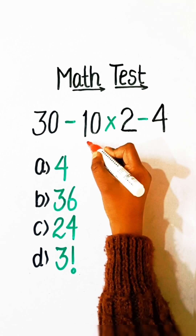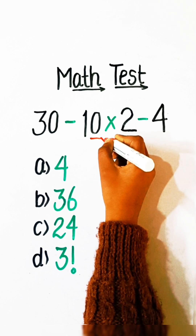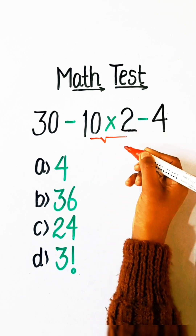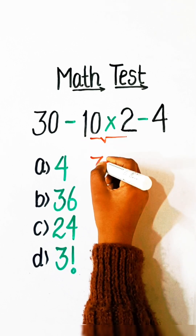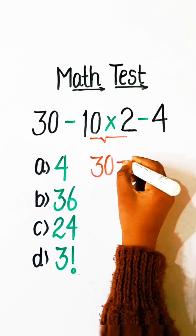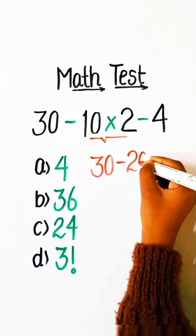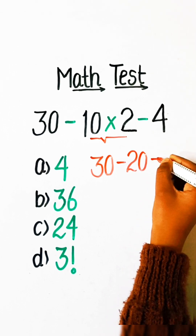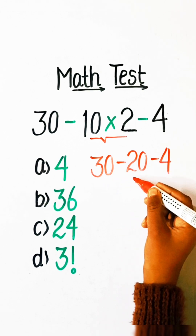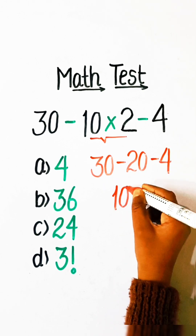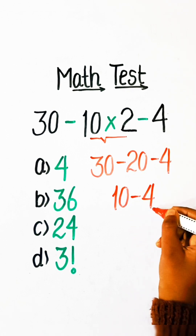So according to BODMAS, we have to solve the multiplication part first. So we will write here 30 minus 10 multiply by 2, which is 20, minus 4.